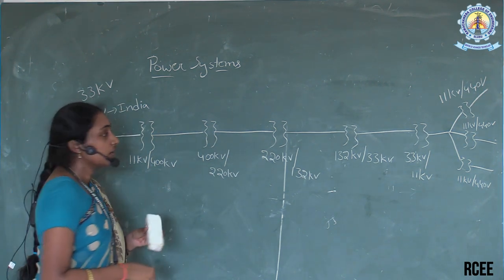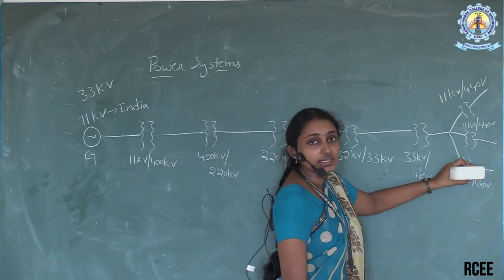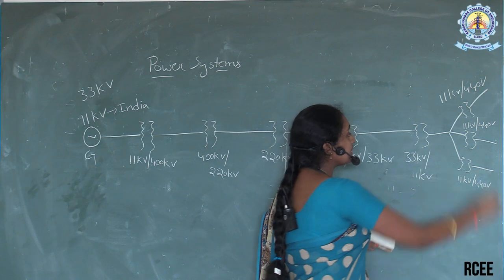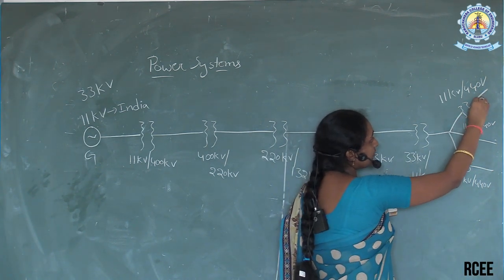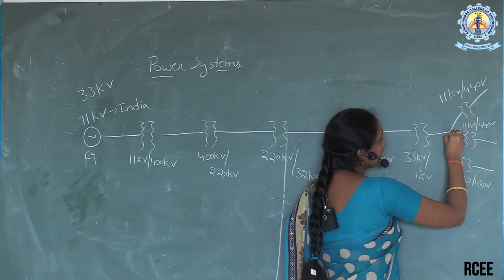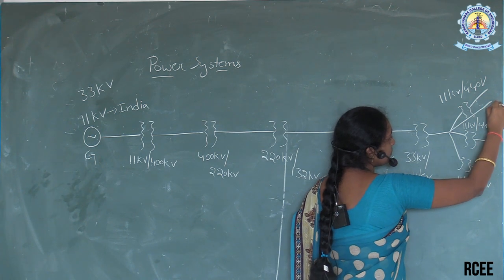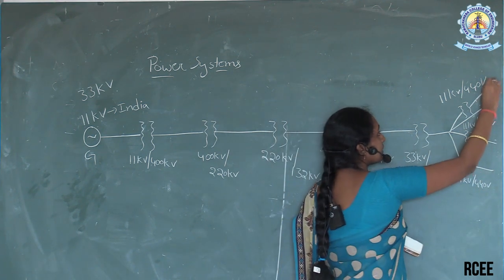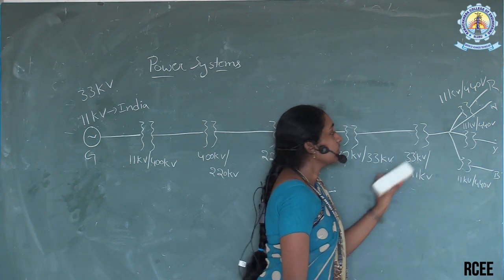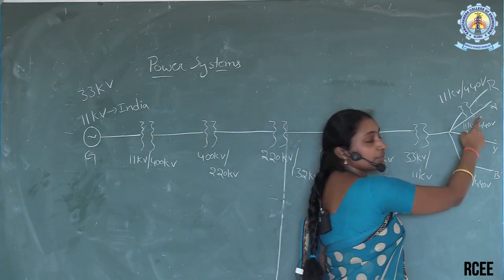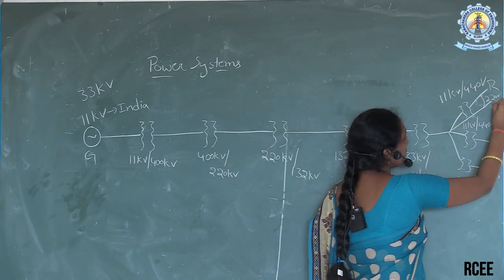But what voltage level are we using? 230 volts. Here we obtain 440 volts — how do we get 230 volts? This is a three-phase system. If we connect a single phase and a neutral wire — suppose we indicate R phase, Y phase, and B phase — if we connect R phase and neutral, you get nearly 220 to 230 volts.